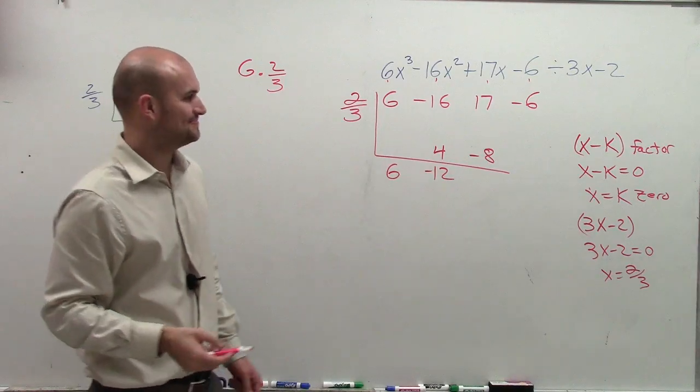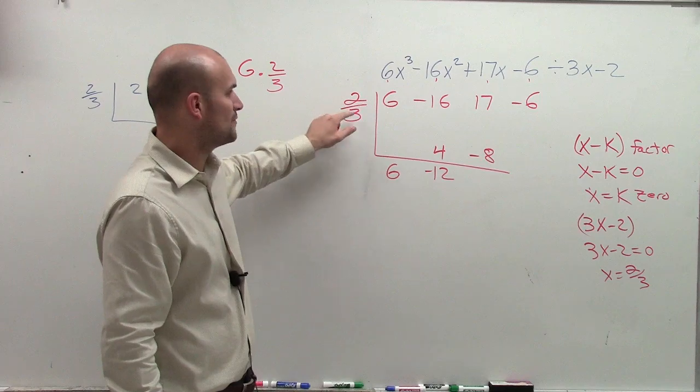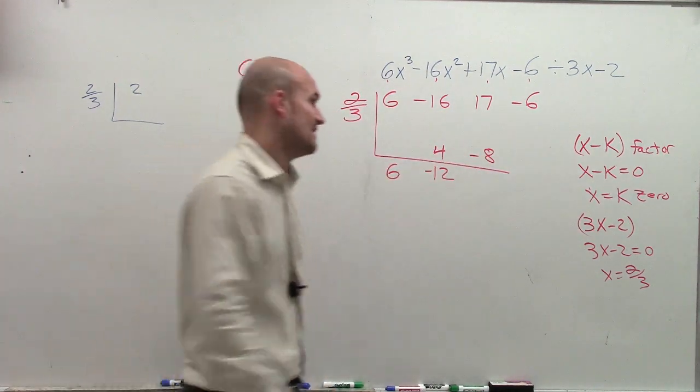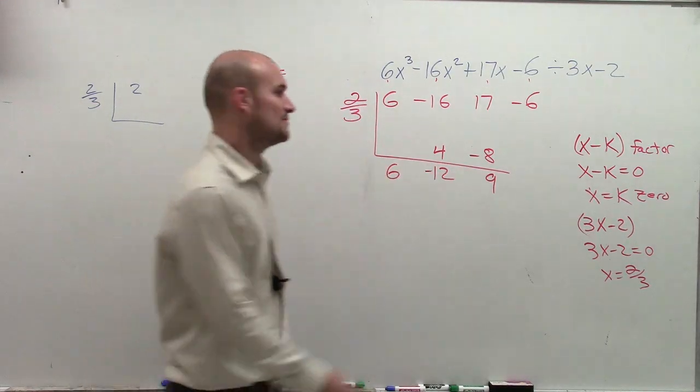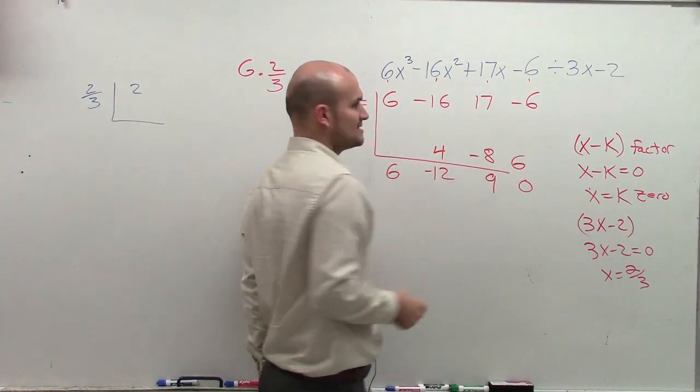Right? Maybe. So 12 times 2 is negative 24. Negative 24 divided by 3 is negative 8. 17 plus negative 8 is now going to give you positive 9. 9 times 2 thirds is positive 6. Negative 6 plus 6 is 0.